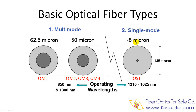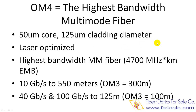On the other hand, single-mode fiber has an 8-micron core. So this gives you the first idea: OM4 fiber is a type of multimode fiber with a 50-micron core. So what is the difference among OM1, OM2, OM3, and OM4 multimode fibers?